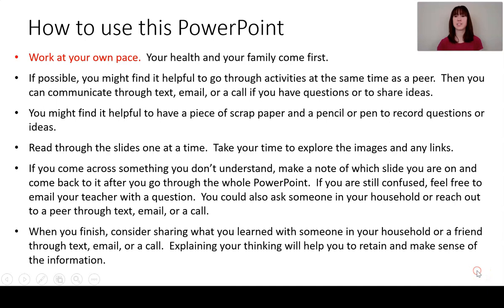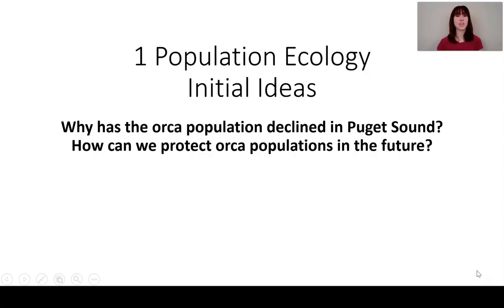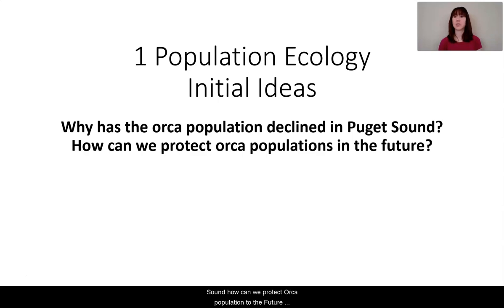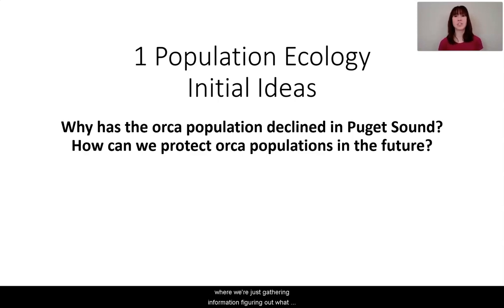Let's get into the lesson itself. Population ecology, initial ideas — lesson one. The two guiding questions are: why has the orca population declined in Puget Sound, and how can we protect orca populations in the future? This is an initial ideas lesson, which is the start of the unit. It's a point where you're not expected to know anything yet — we're just gathering information and figuring out what you already know.